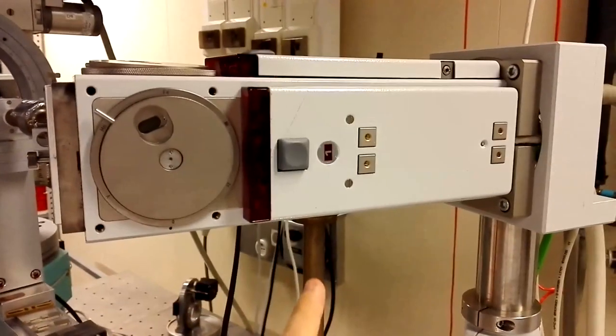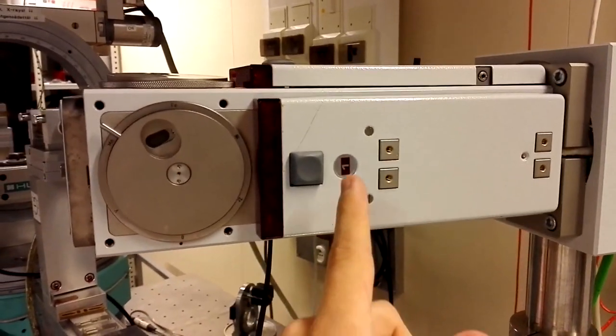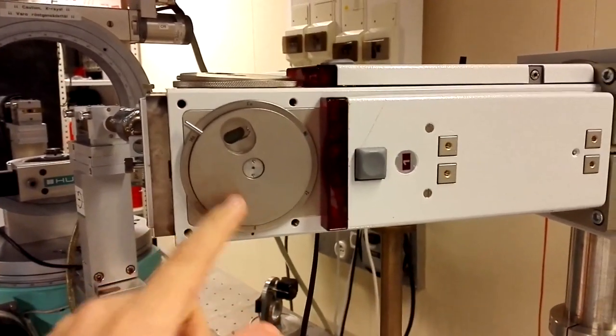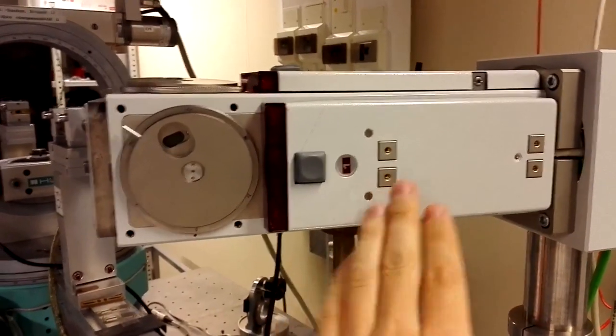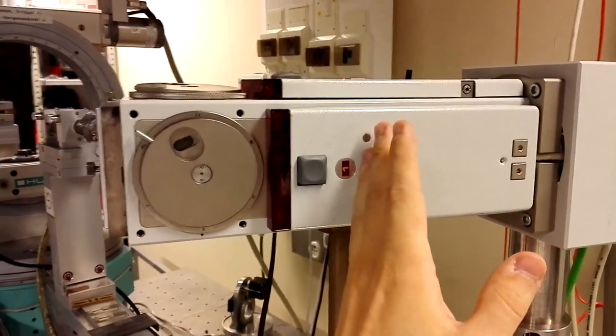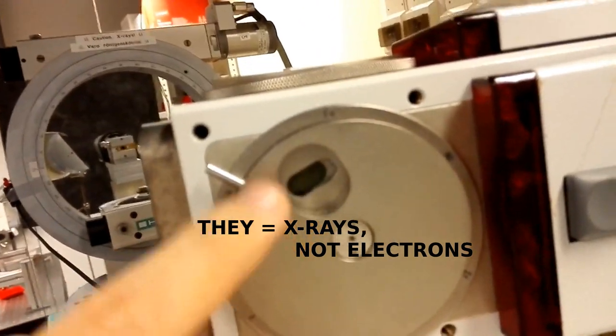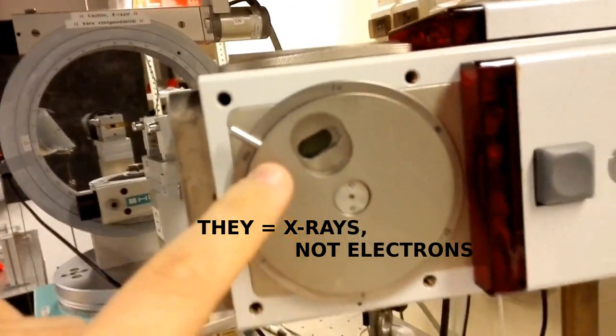But if we see inside, we see that the filament is somewhere here, the anode is somewhere here. So the electrons would be accelerated from this part to this part, and they would come out of this aperture here.